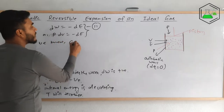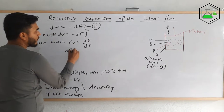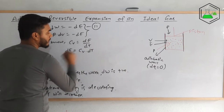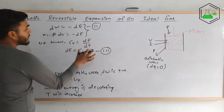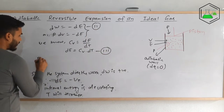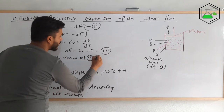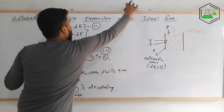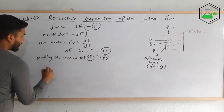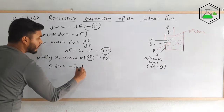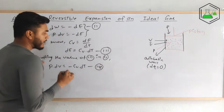We know Cv = dE/dT, so dE = Cv dT. This is equation number three. Now putting the value of equation three into equation two, we get p dV = −Cv dT. This is equation number four.